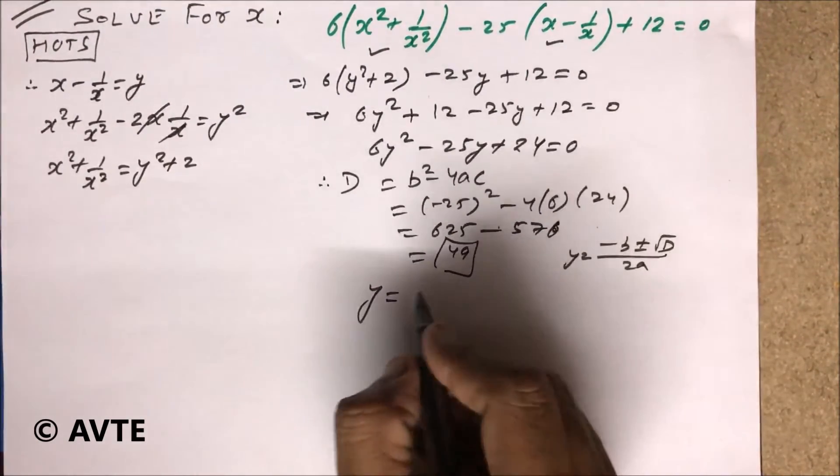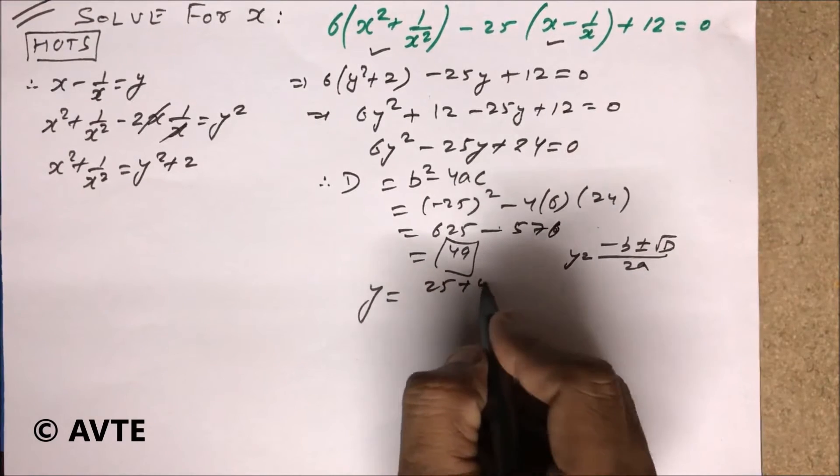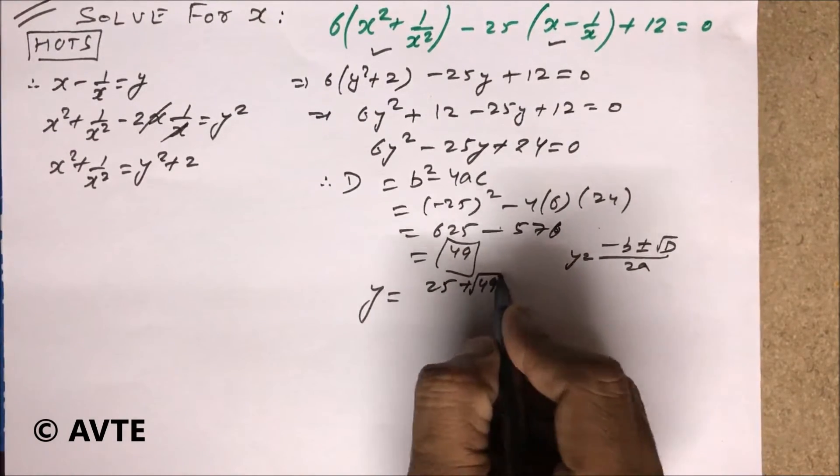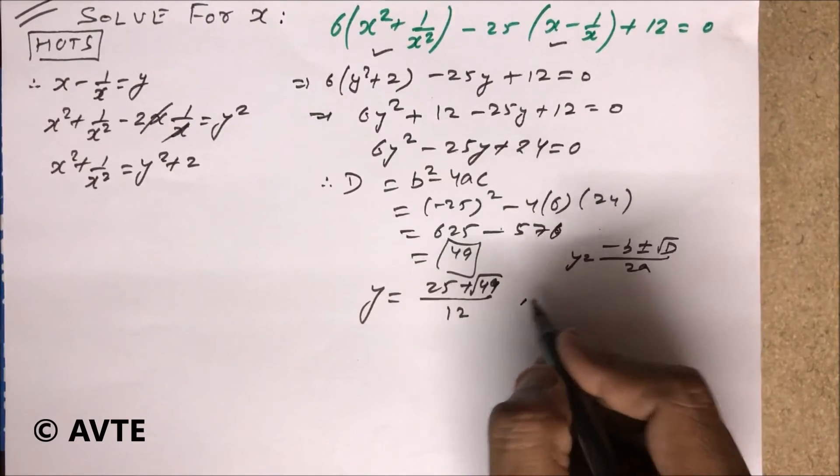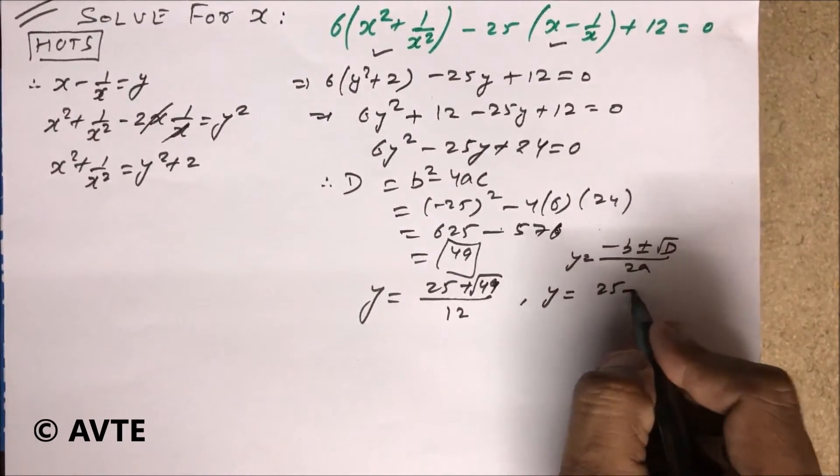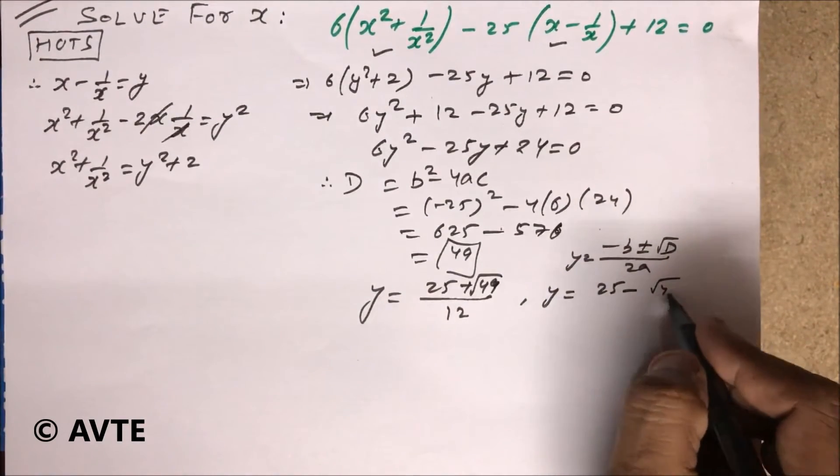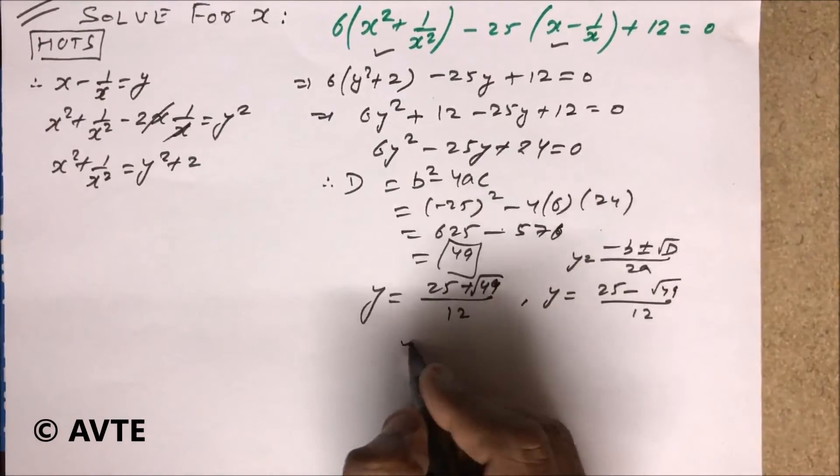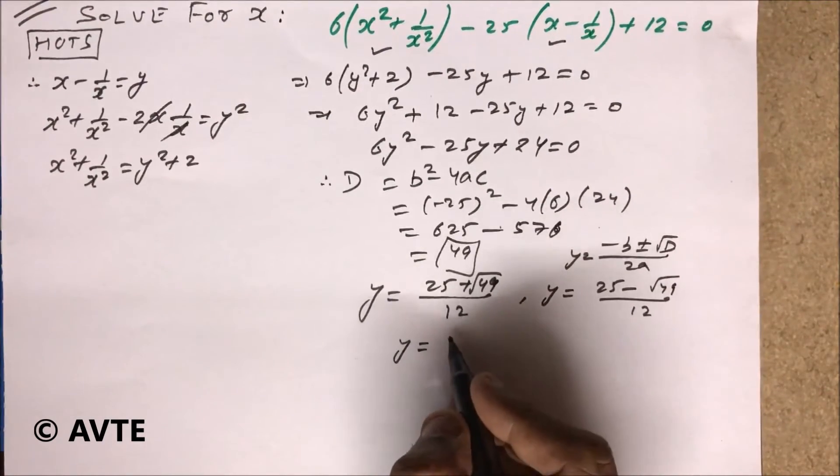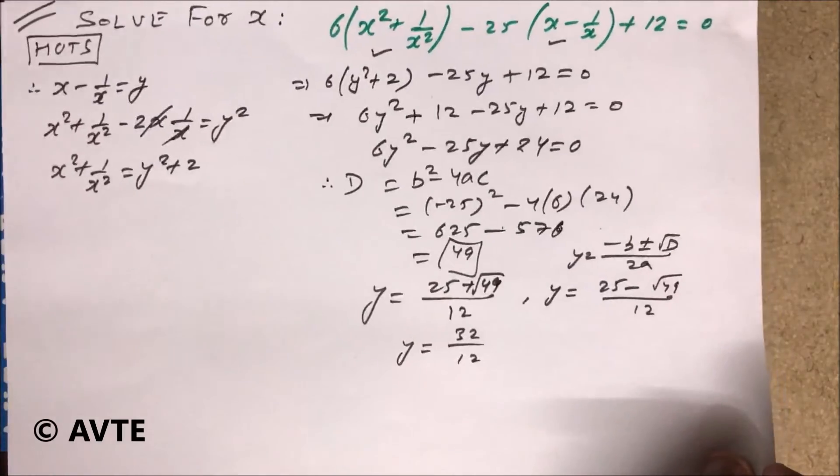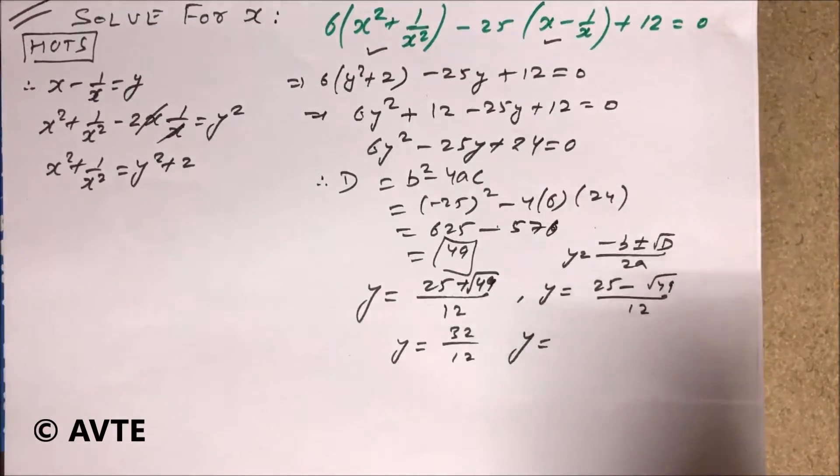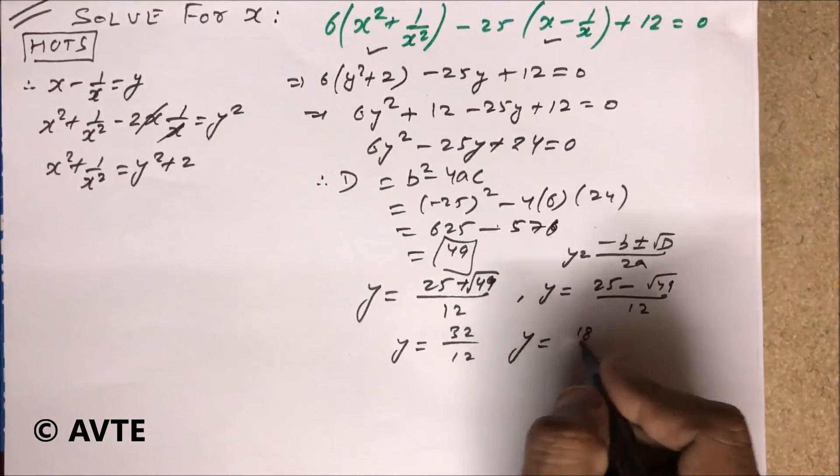So 25 plus minus root 49 by 12, that's 25 plus minus 7 by 12. This is 32 upon 12 and this is 25 minus 7 is 18 by 12.